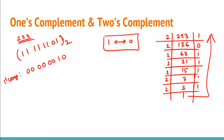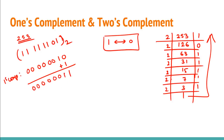To calculate the twos complement, you take the ones complement and simply add one to it. So the twos complement of 253's ones complement gives you the final result. That is how you calculate the ones complement and twos complement of any decimal or binary number.